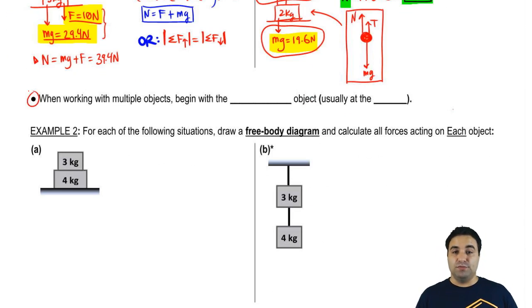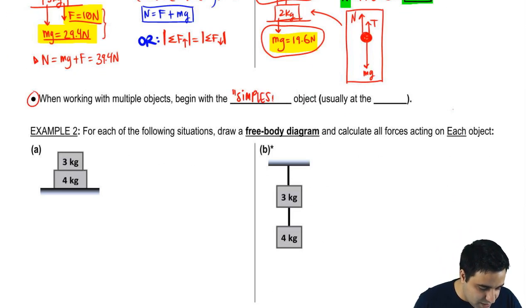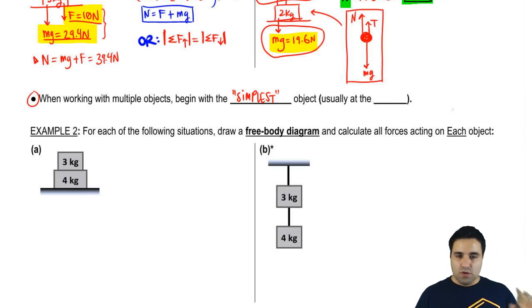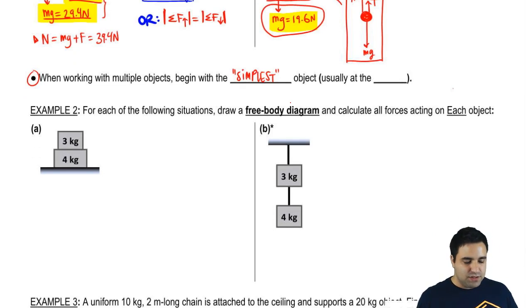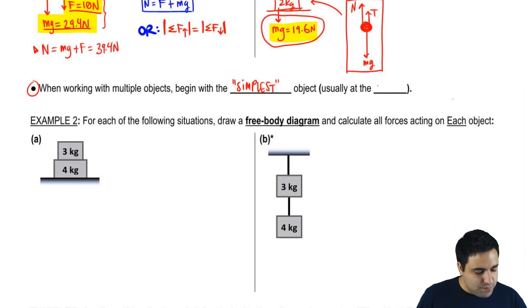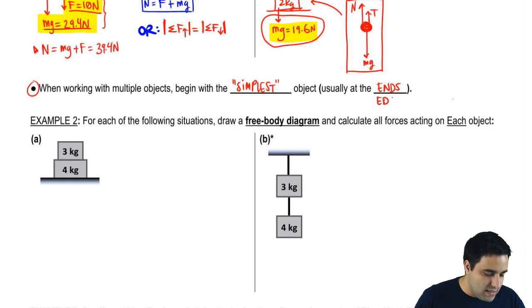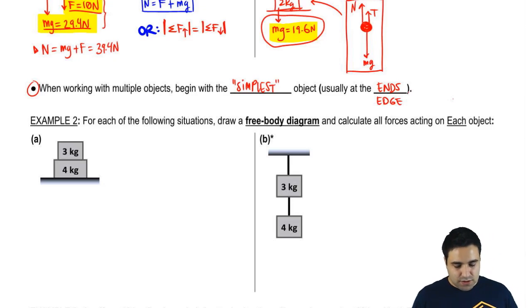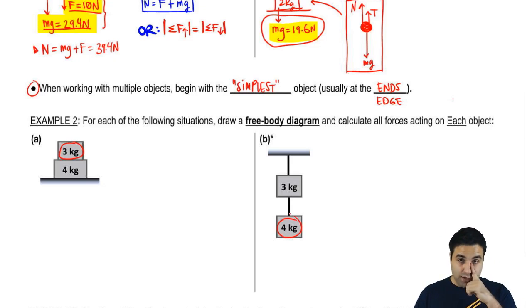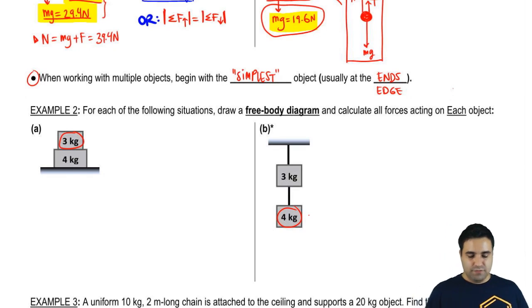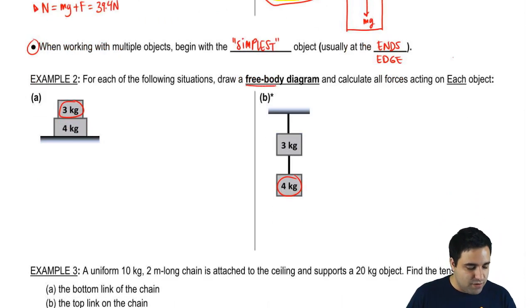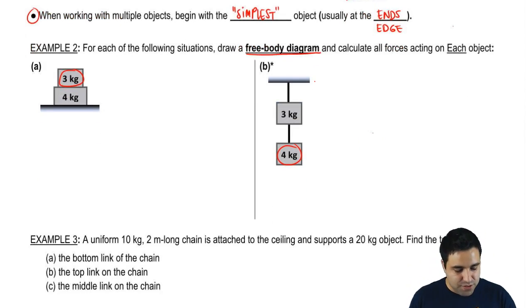When working with multiple objects, begin with the simplest object — the one with the least amount of forces acting on it. It's usually going to be an object at the end or edge of the problem. So in this case it would be the three, and in this case it would be the four. You want to start with those guys first. I want to draw a free body diagram for each and calculate all the forces. Let's start with the three.